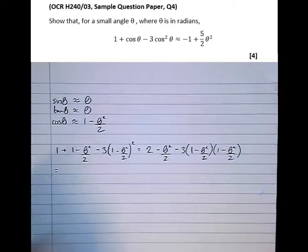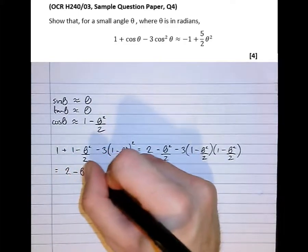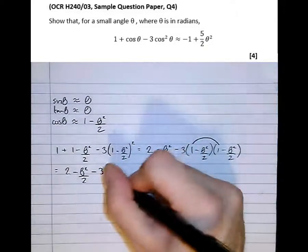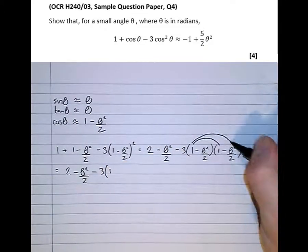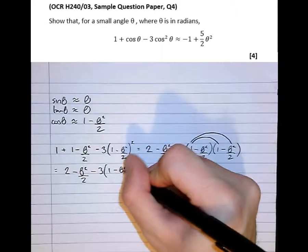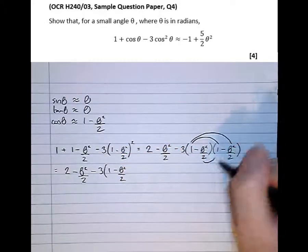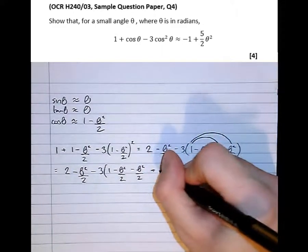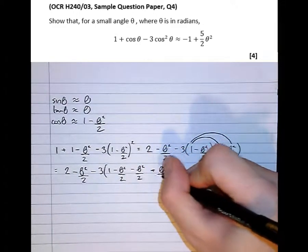Keep going. 2 minus theta squared over 2, minus 3 lots of, so let's get this multiplied out. 1 minus theta squared over 2, minus theta squared over 2, plus theta to the power of 4 over 4.